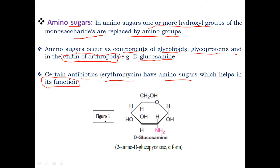You can see in Figure 1 the structure of D-glucosamine. It is a pyranose sugar. The chemical name is 2-amino-D-glucopyranose, alpha form. '2-amino' means that at carbon 2 an amino group is present replacing the OH group. Carbon 1, carbon 2, carbon 3, carbon 4, carbon 5 — the ring structure is pyranose because it contains five carbons in the ring and it is a hexose sugar.